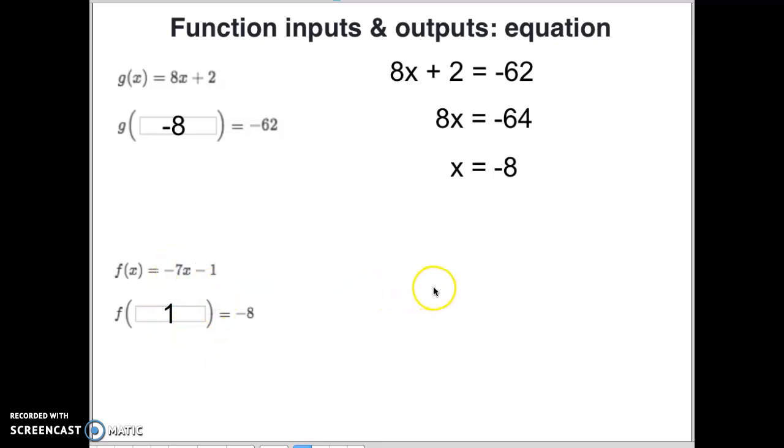So if we solve it algebraically to prove it, we could set this equation up to negative 7 minus 1 equals negative 8. We add 1 to both sides. We get negative 7 equals negative 7. Divide both sides by negative 7. We get x equals 1.